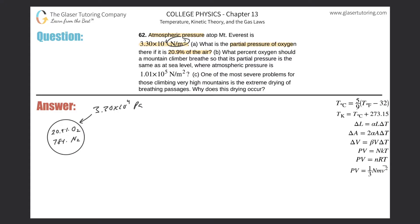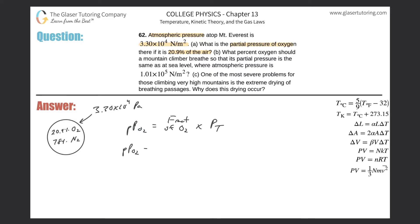Remember, newton per square meter is the same as pascal. We then know that the partial pressure attributed to oxygen in this mixture is proportional to its percent. In other words, the partial pressure of O2 equals the fraction of O2 present in the mixture multiplied by the total pressure.